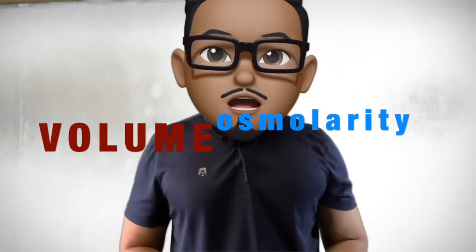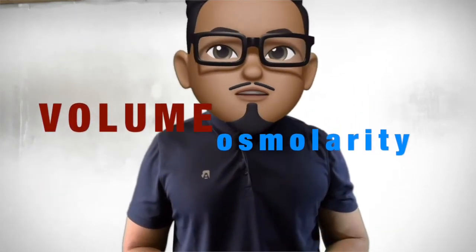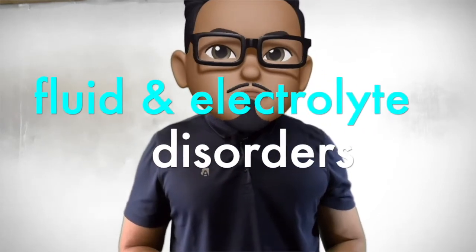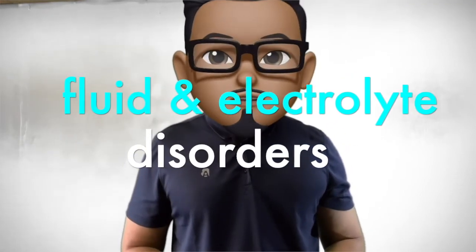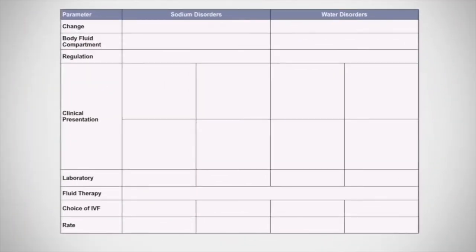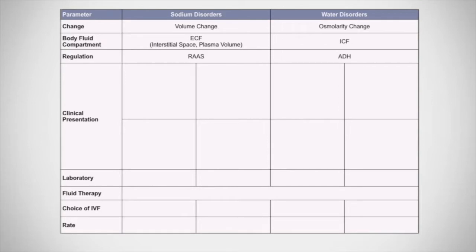Volume and osmolarity are two distinct but very related concepts in renal physiology. Knowledge of their differences is critical, especially in the management of fluid and electrolyte disorders. Sodium disorders deal with volume change while water disorders affect osmolarity. The body fluid compartment affected by sodium disorders is the ECF, while water disorders affect the intracellular fluid space. Regulation is primarily through the renin-angiotensin-aldosterone system for sodium disorders, while for water or osmolarity problems, it is the antidiuretic hormone axis.